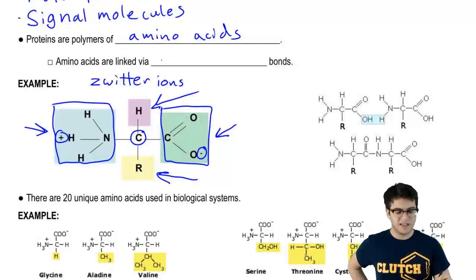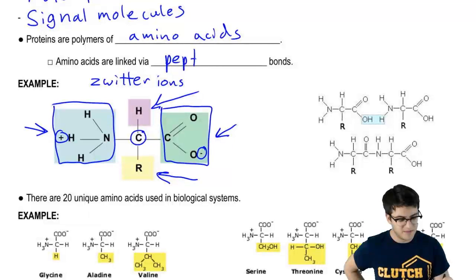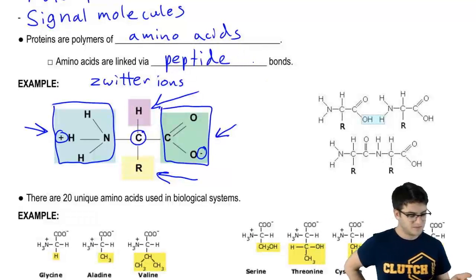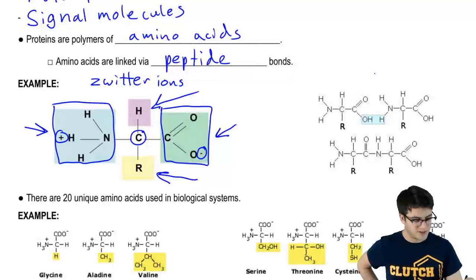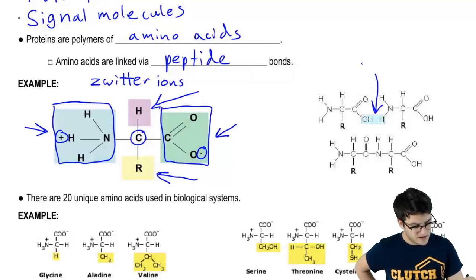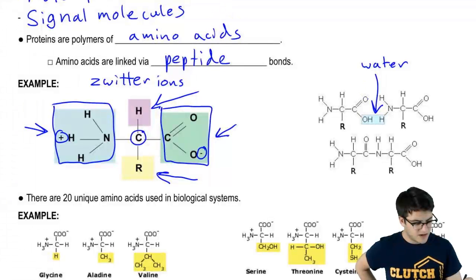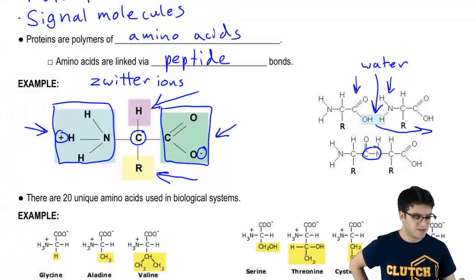Now, amino acids are linked together via peptide bonds. Peptide bonds form via dehydration reaction. See there is water between the carboxylic acid group over here and the amine group here. We can remove this water and form this peptide bond right there.